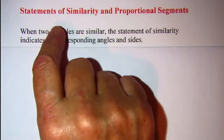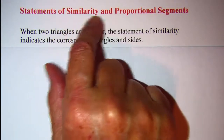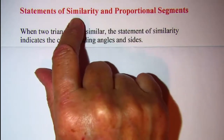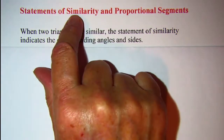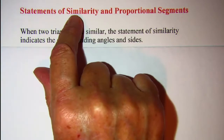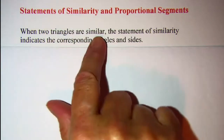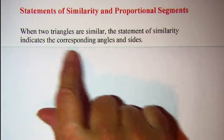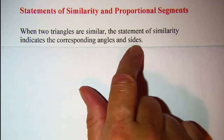In this video we'll be talking about statements of similarity and proportional segments. Recall that when two triangles are similar, the corresponding angles are congruent and the corresponding sides are proportional. The statement of similarity indicates those corresponding angles and corresponding sides.